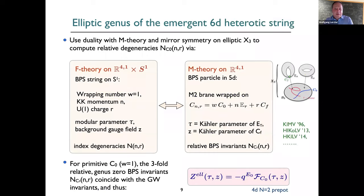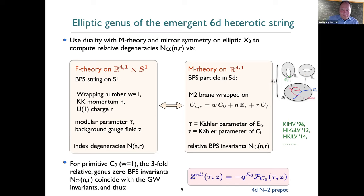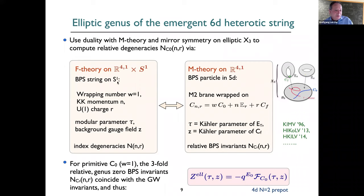With the F-theory setup, we want to use it to compute the elliptic genus of emergent heterotic strings which become tensionless or almost tensionless in asymptotic limits. The advantage is a non-perturbative setup. It could also be other strings — not necessarily a dual heterotic string, but strongly coupled theories, other strings, or mixtures of heterotic strings with E-strings. There is a duality between F-theory and S^1: we have a BPS string in 6 dimensions wrapping on S^1, with quantum numbers given by wrapping number, KK momentum, and U(1) charge.